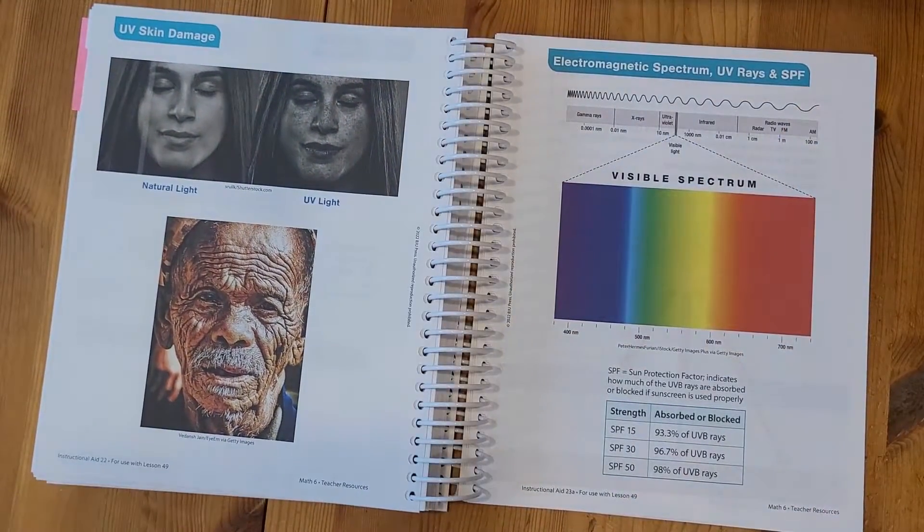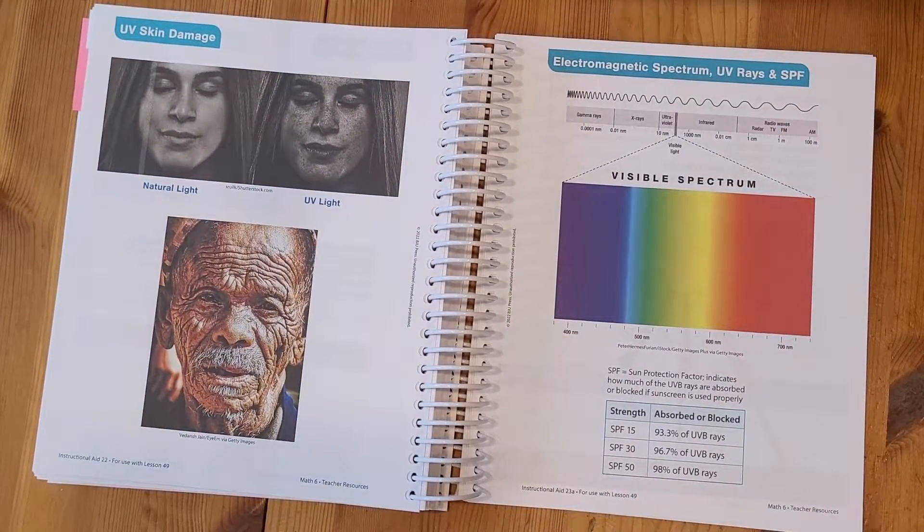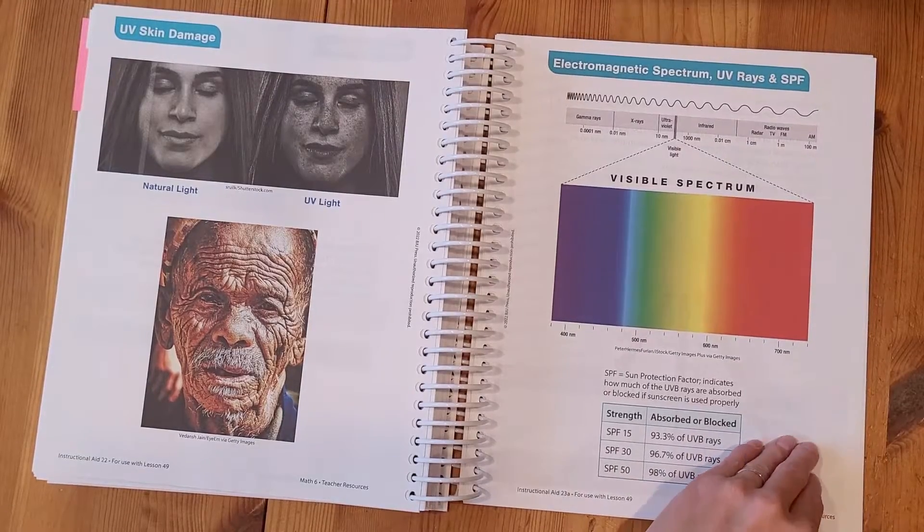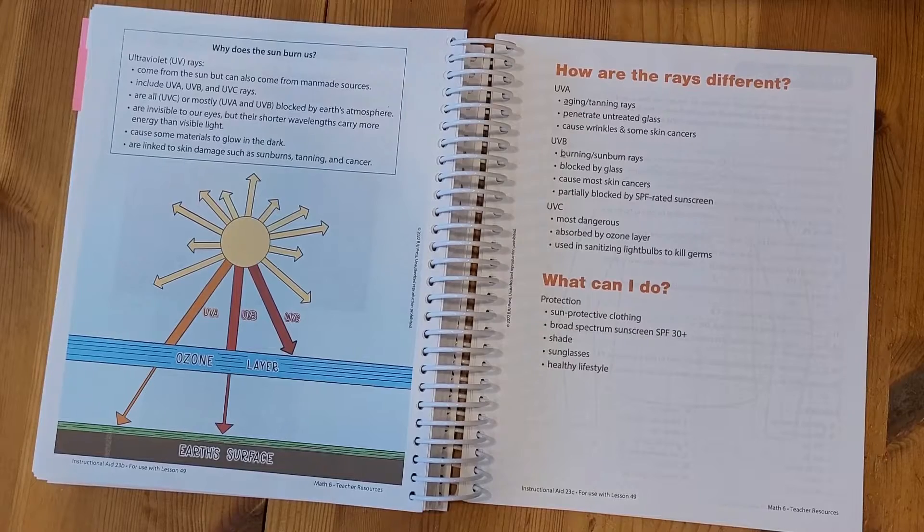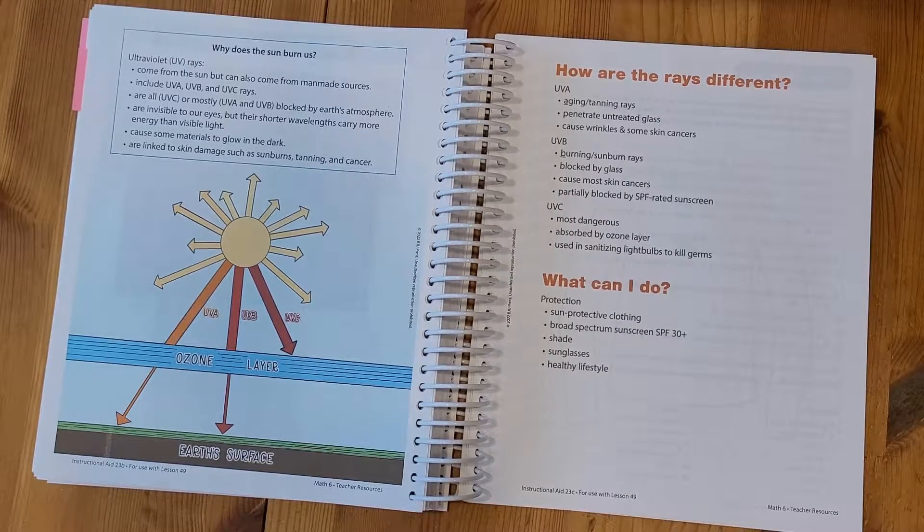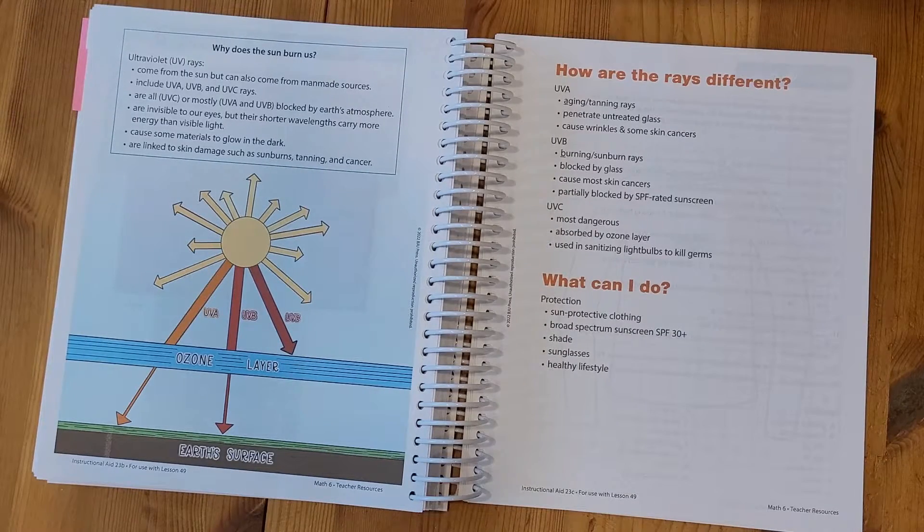That STEM project also had some instructional aids to go with it. And I just wanted to point out that these are also listed at the back of your TE in the instructional aids. But again, you can find those on Homeschool Hub as well.